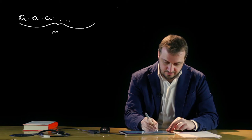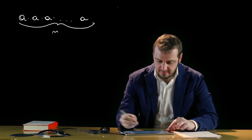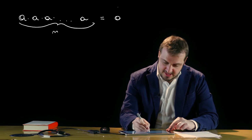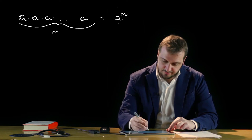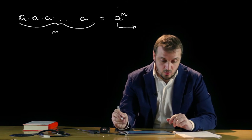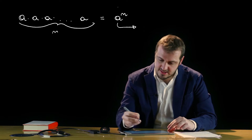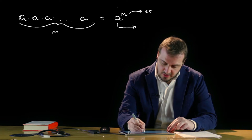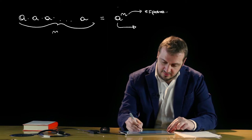La potenza è una risposta matematica a prodotti di questo tipo, ovvero prodotti caratterizzati da un numero n di fattori, tutti uguali tra di loro. La potenza è un'espressione di questo tipo, dove a viene chiamata base ed indica quel fattore che viene moltiplicato per se stesso, n invece si chiama esponente, che rappresenta il numero delle volte per cui quel fattore viene moltiplicato.